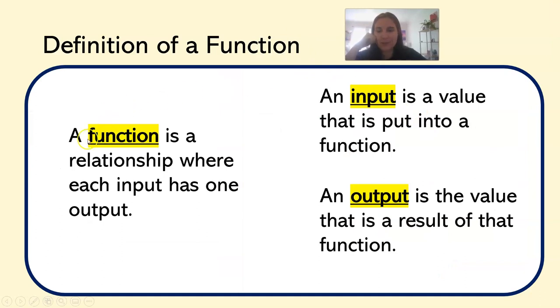So let's define a function. A function is a relationship where each input has one output. So I type a code in, and I get the thing out. An input is a value that is put into a function, and an output is the value that is the result of a function. So in and out.